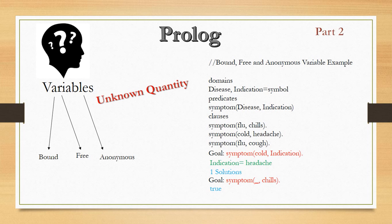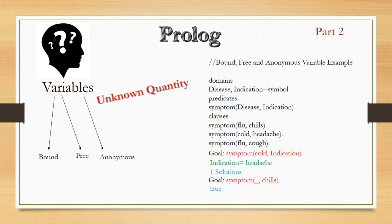Two things to note: in the domain I passed disease and indication as equal to symbol. Disease with a capital D and Indication with a capital I makes both of them variables rather than objects. An object is always written in lowercase, but a variable is always written with an uppercase letter. When an object data type is assigned to a variable, the variable becomes that object type — so here disease and indication are variables of symbol type.